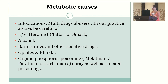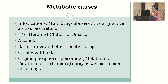Regarding metabolic causes, in Punjab we encounter IV heroin (chitta), smack, alcohol, barbiturates, sedative drugs, opiates, and organophosphorus poisoning every day. Spray poisoning — organophosphorus or non-organophosphorus — is common. Different kinds of suicidal poisonings are also emerging, including paraquat poisoning, which is increasingly being used.